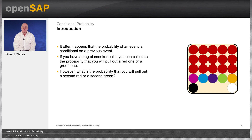If you have a bag of snooker balls you can calculate the probability that you will pull out a red one or a green one. However, what is the probability that you will pull out a second red or a second green? Well, the latter is zero as there is only one green. However, there is the possibility of taking another random red, though the probability has changed because you have already taken one red out. How do you calculate that conditional probability?